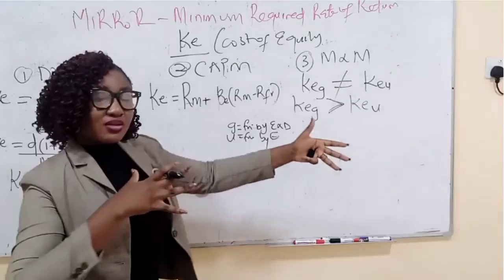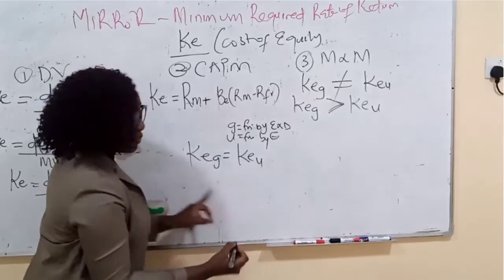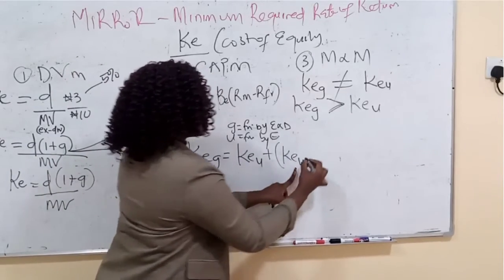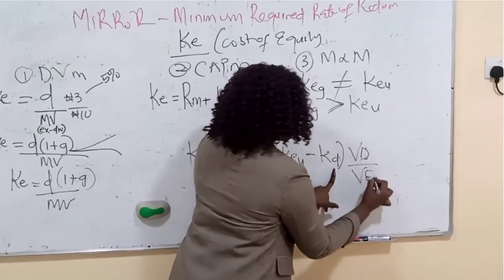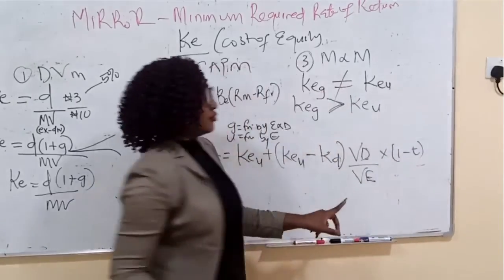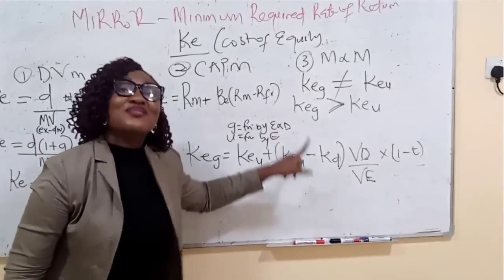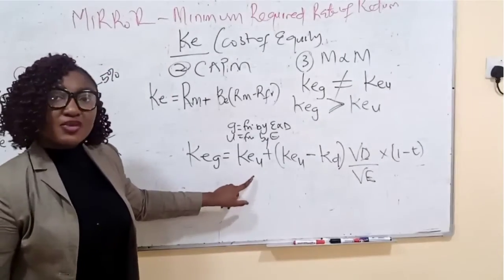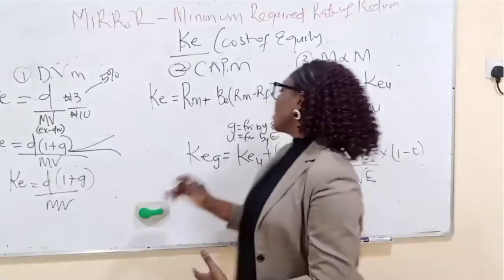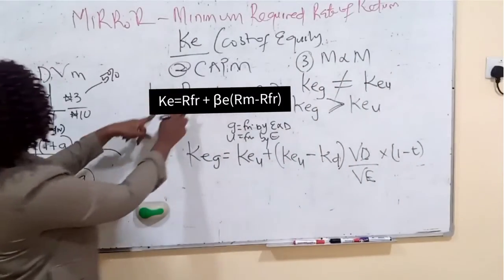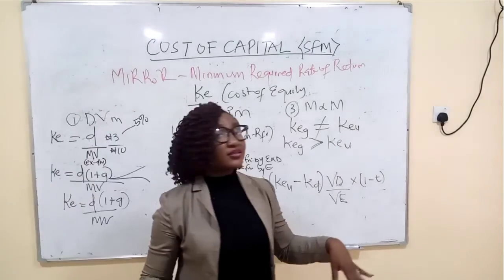To move between geared and ungeared cost of equity, the M&M formula is: cost of equity of the geared company equals cost of equity of the ungeared company plus (cost of equity of the ungeared company minus cost of debt) times value of debt over value of equity times (1 minus tax rate t). You impute your variables and solve for the unknown. That is the M&M approach, alongside the CAPM and the Dividend Valuation Model.